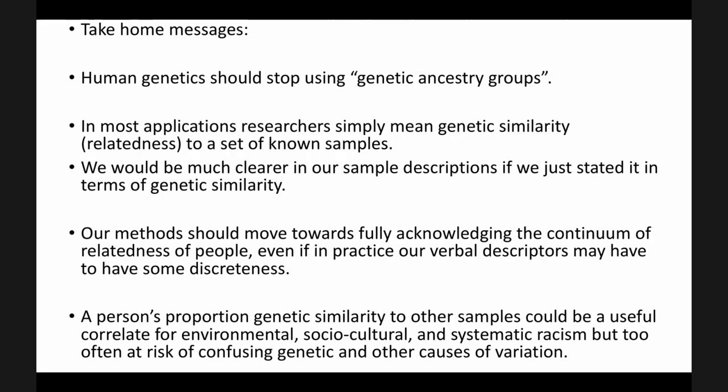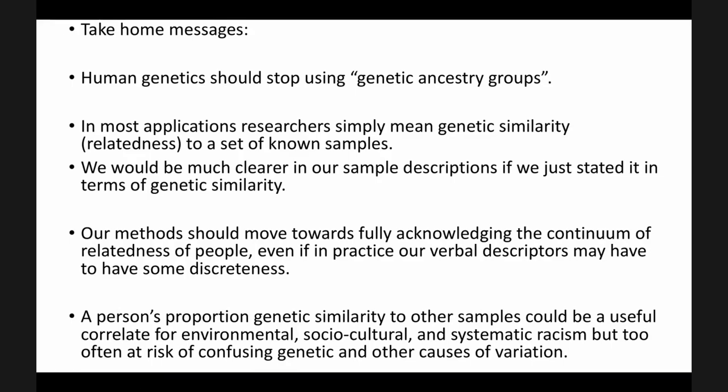For all those reasons, I think human genetics should move away from using genetic ancestry groups. In most applications, we simply mean genetic similarity, and we'd be much clearer in our sample descriptions if we use those terms. Our methods are and should move forward to more thoroughly acknowledging the continuum of relatedness of people. When we use verbal descriptions, there's always going to be some discreteness, so we should try to make them as clear as possible. With that, I'd like to finish and take questions from the panel along with everyone else.